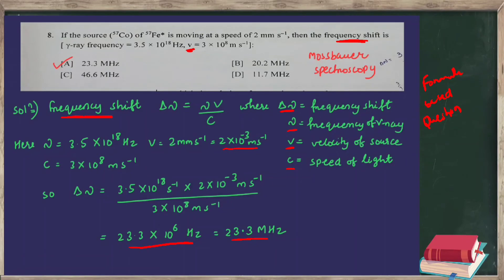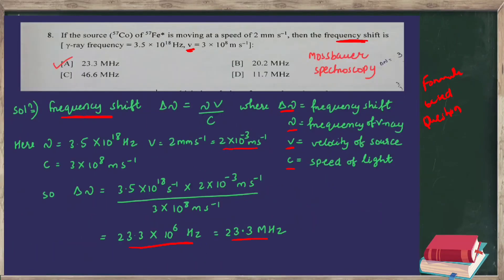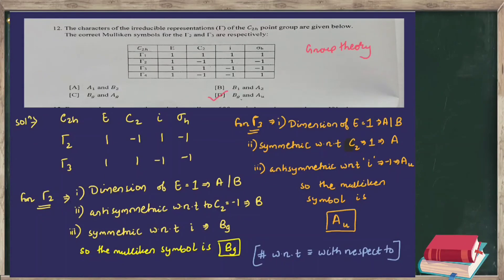There were two spectroscopy questions in Part A this year — one from inorganic NMR spectroscopy and one from Mössbauer spectroscopy. The last question is from group theory: the characters of the irreducible representations of the C₂h point group are given and it asks for the Mulliken symbols for τ₂ and τ₃.